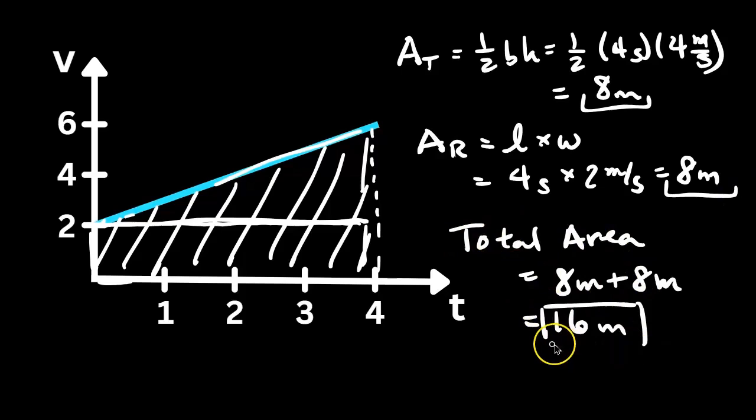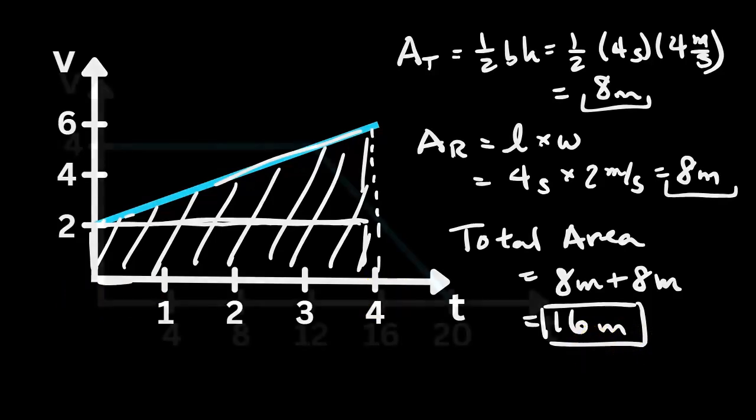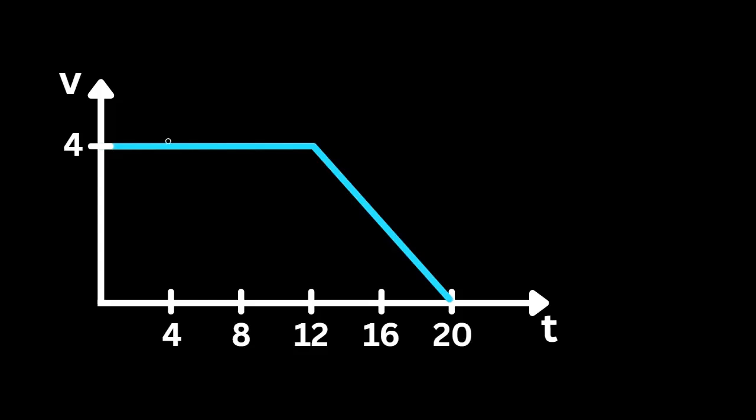So the total area is 16 meters. And what that tells us is that the displacement of this object over 4 seconds is 16 meters.